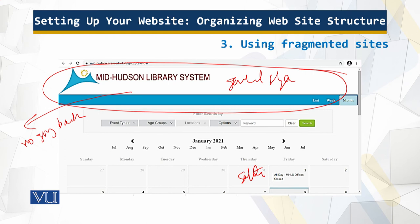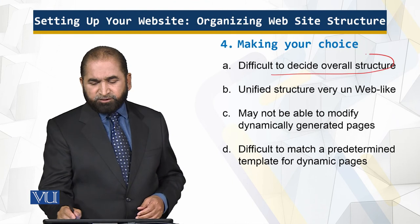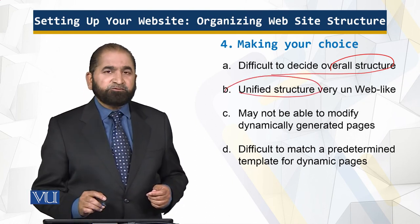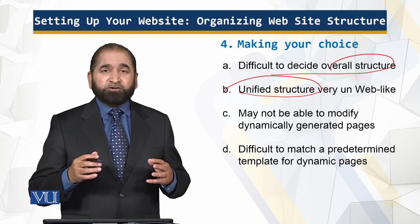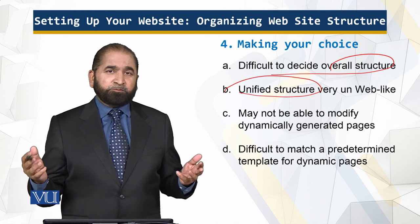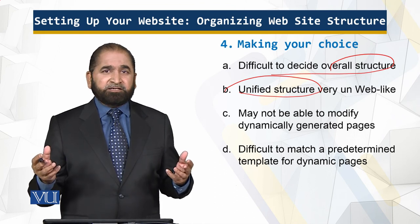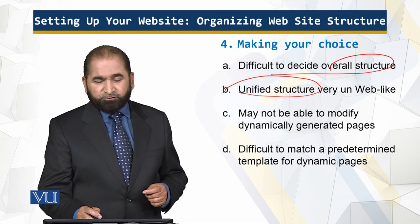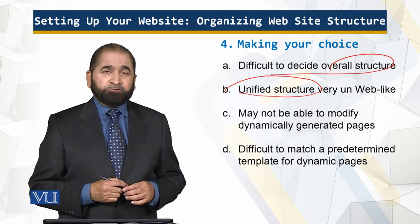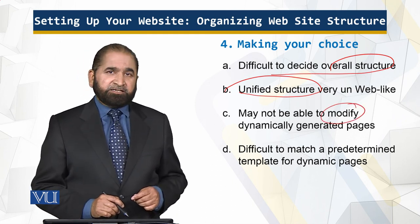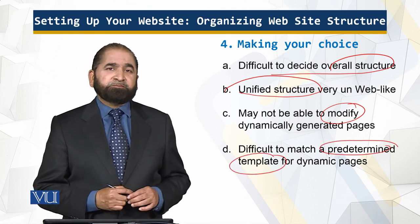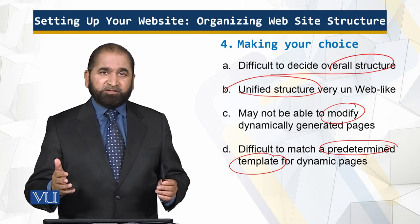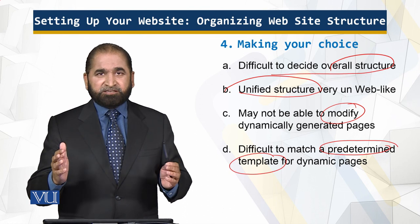So which is the good choice? It is your choice. It is difficult to decide the overall structure — maybe because of company policy, maybe because of the choices of individuals. The unified structure is very, very un-web-like, because the web is about open total freedom. People and companies can have their own structures, their own ideas, their own designs in their websites and web pages — so unified opposes that. And of course, it is very difficult, if not impossible, to modify dynamically generated pages and follow a predetermined template. So you have to take all of these points into consideration before you present that wonderful web-based database application to your visitors.